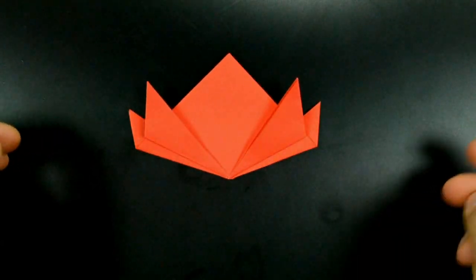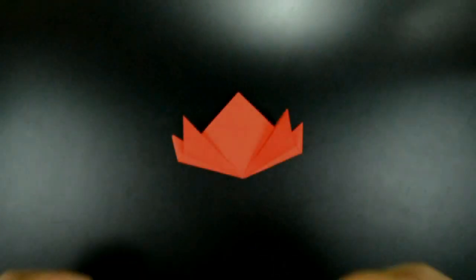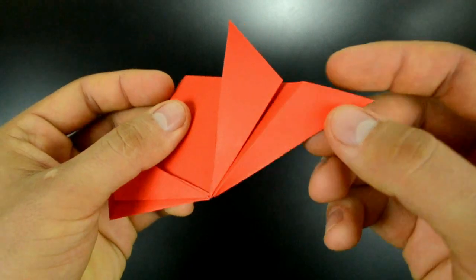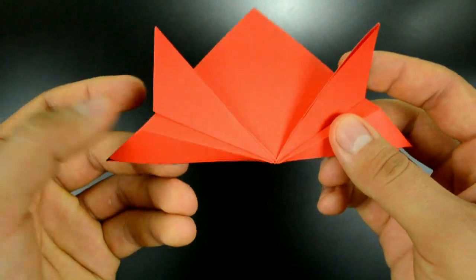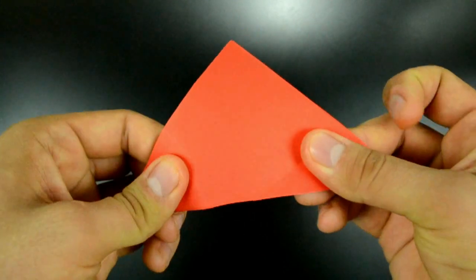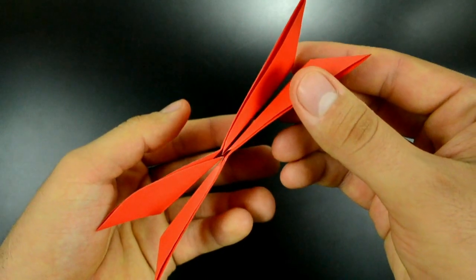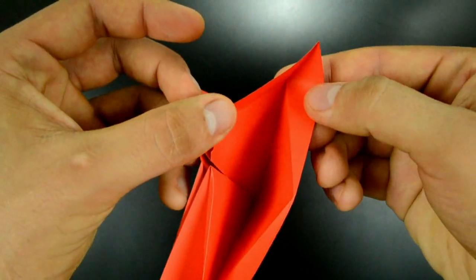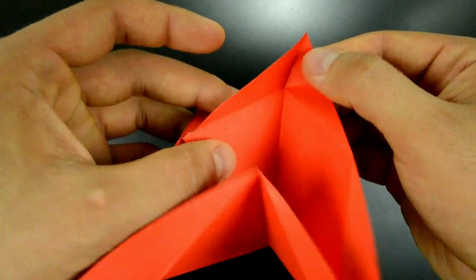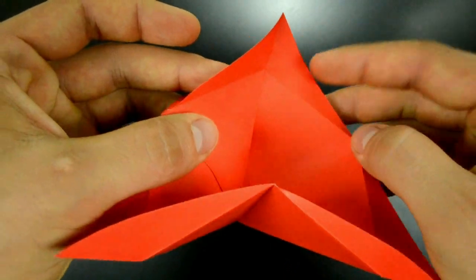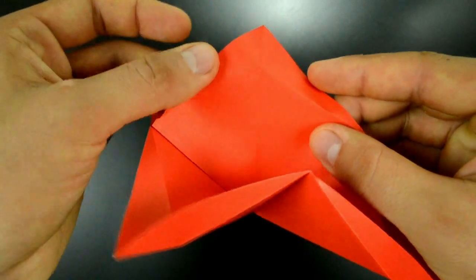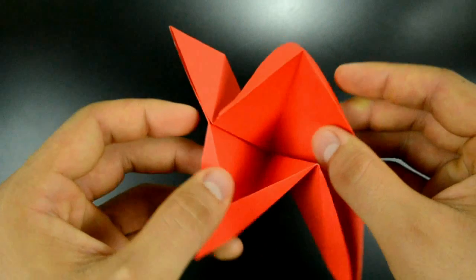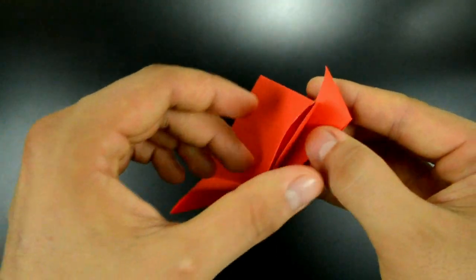And a little attention for the next step. Unfold these corners, these flaps. And using these diagonal creases, we need first to open each flap and reverse on these two lines. Giving this shape.